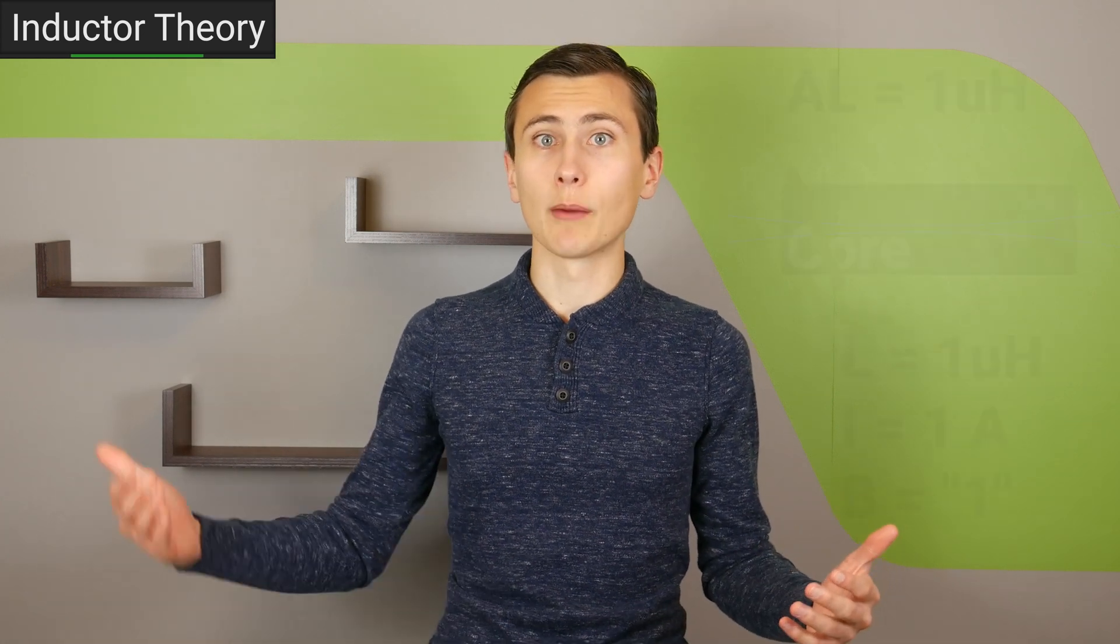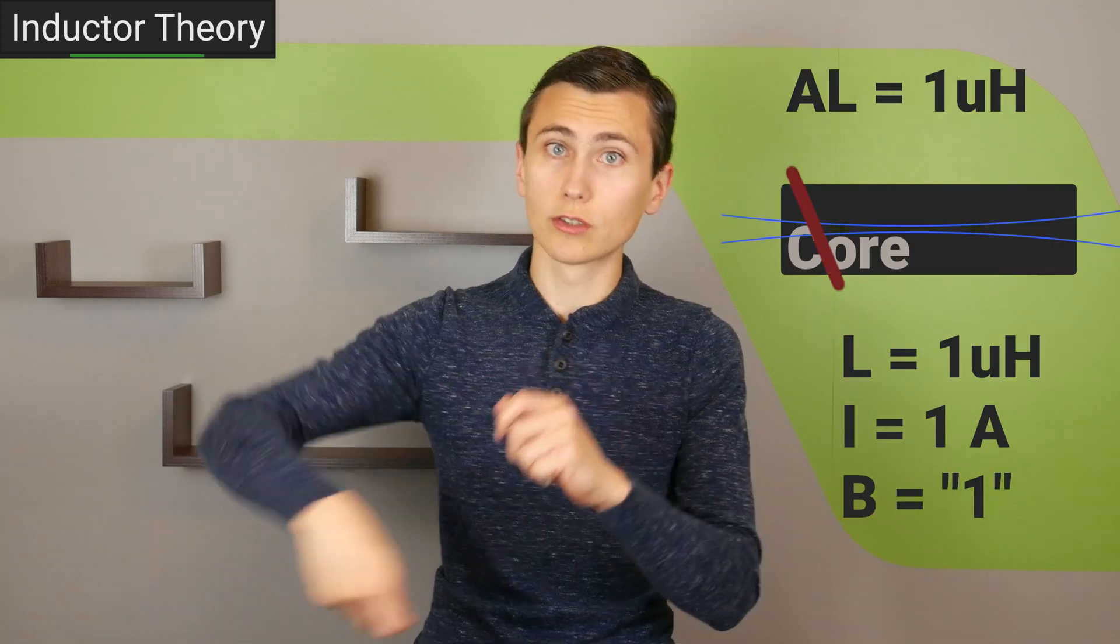Another material property of a particular core material is typically known as AL, or the inductance factor. This factor, AL, for a particular material and core geometry is how much inductance will result from one turn of wire around the core.